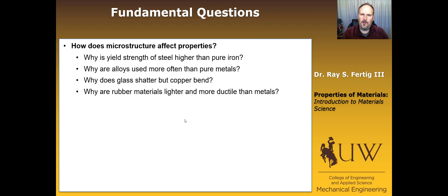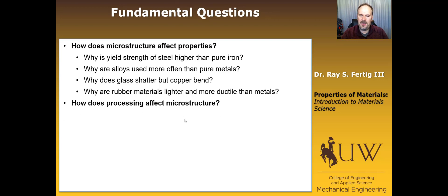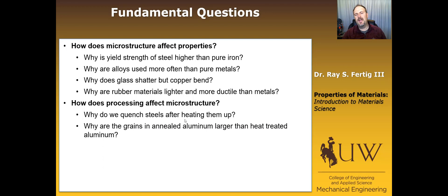The first fundamental question throughout the class is how does microstructure affect properties, looking at microstructures ranging from atomic arrangements up to large-scale microstructural features. The second question is: how does processing affect microstructure? For example, why do we quench steels after we heat them up? And why are grains larger in annealed aluminum than heat-treated aluminum? We're going to be able to answer those questions, and you'll know why one gives you different mechanical properties than the other.